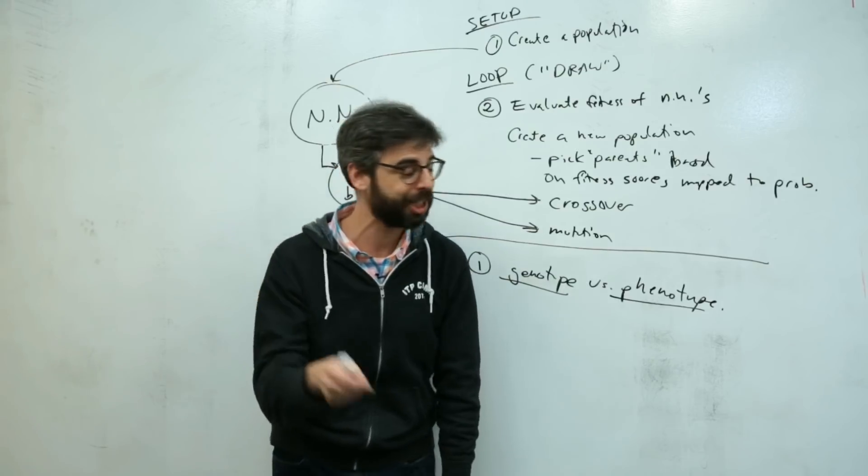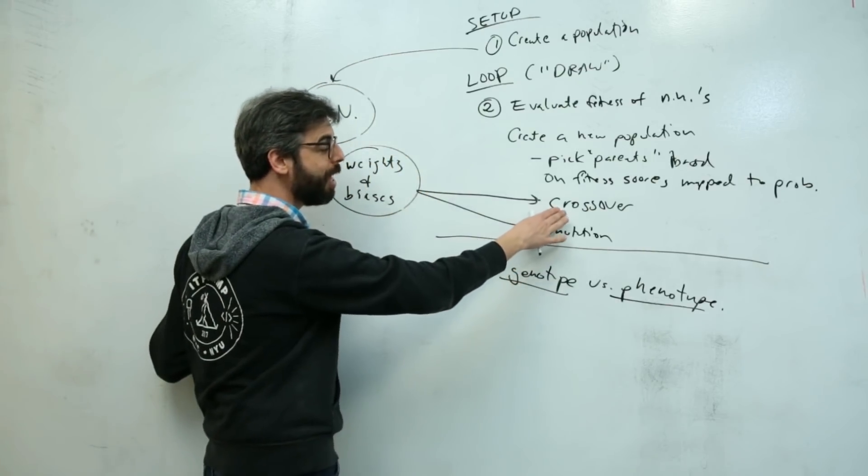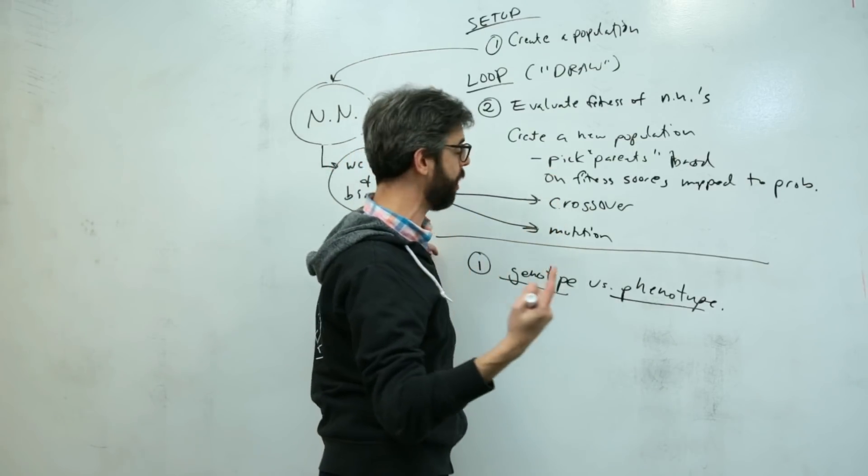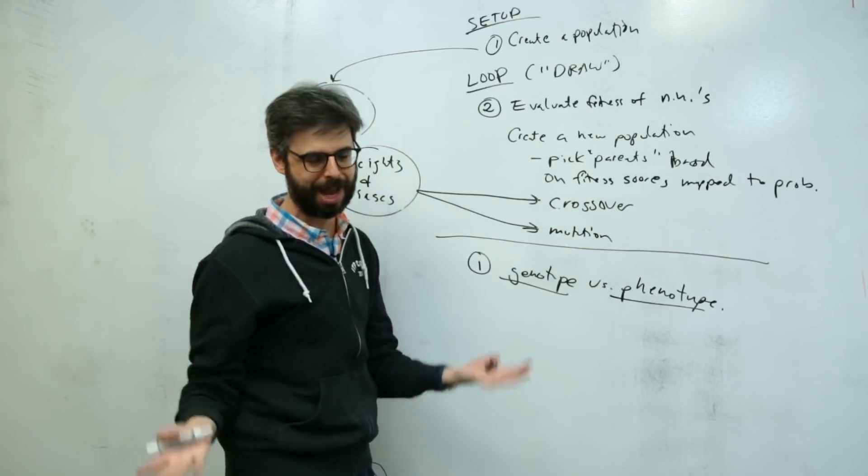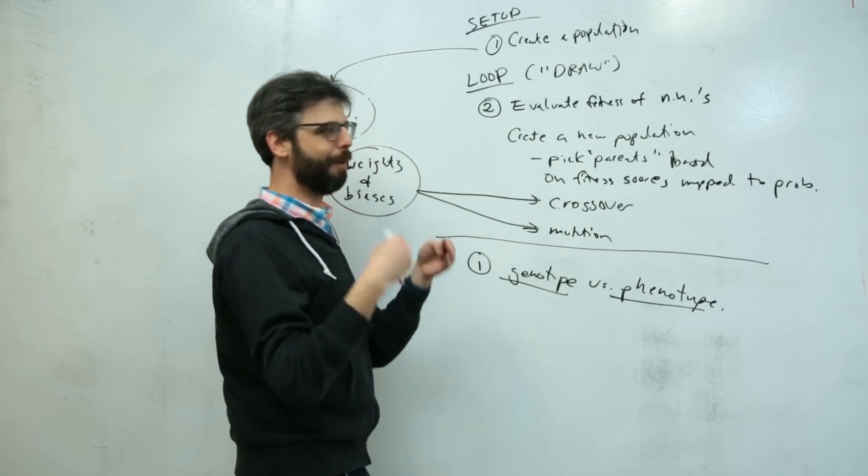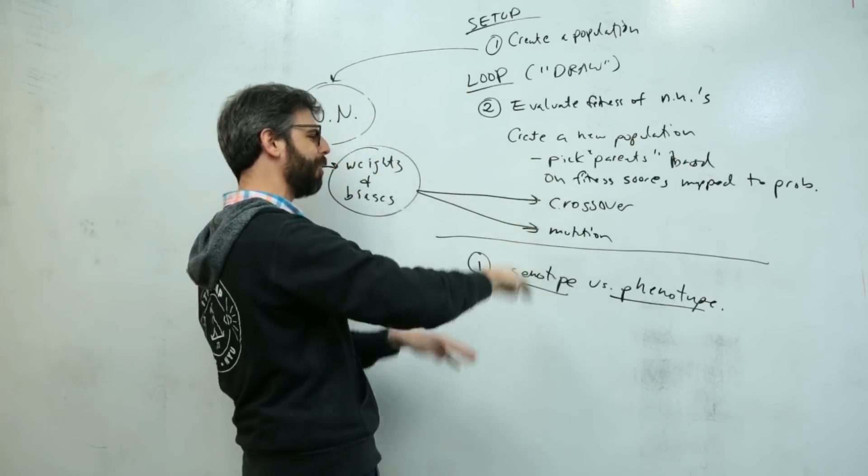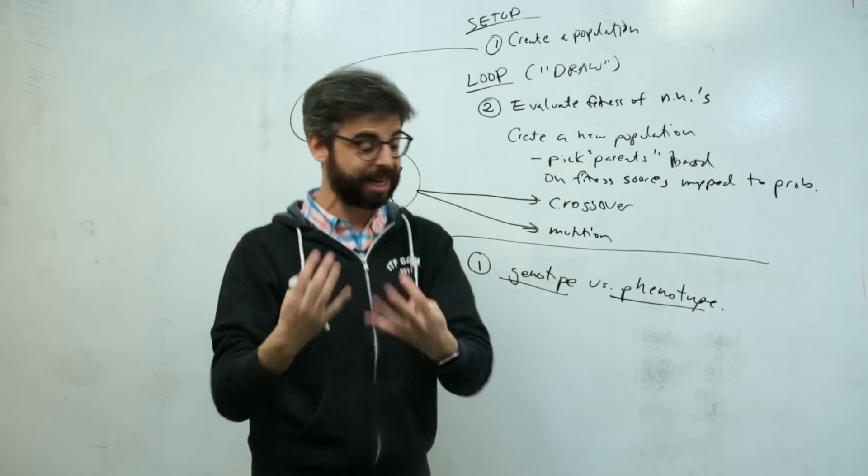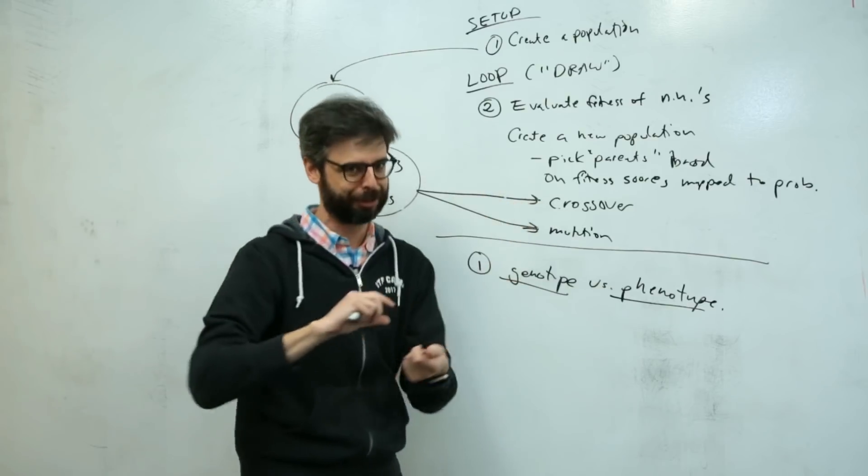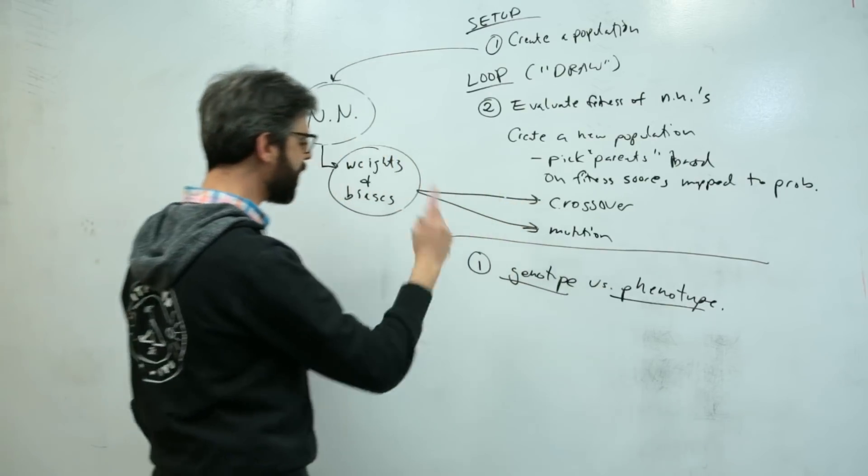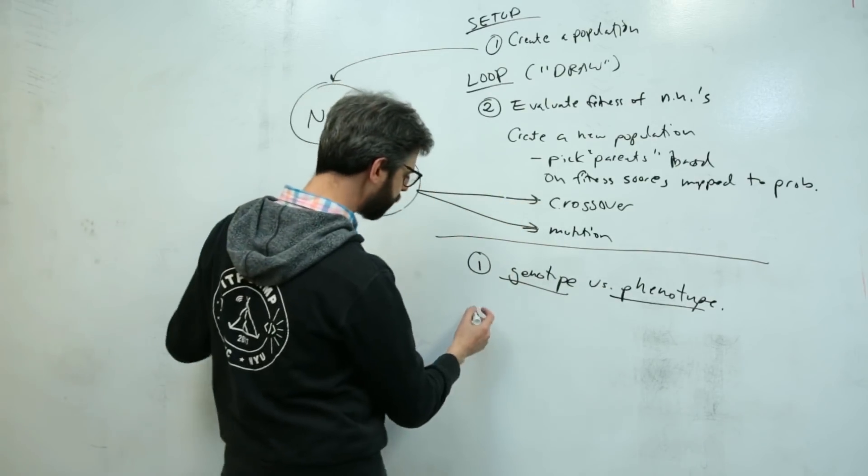To be honest, what I might do at first is not even bother with crossover and not even bother with picking more than one parent. One technique to simplify the genetic algorithm is just to make copies. I can pick the good ones and make copies. It may not work as effectively as crossover but it'll certainly be easier to code.